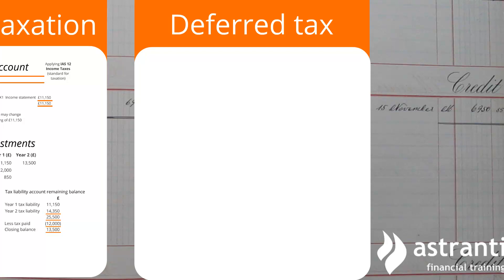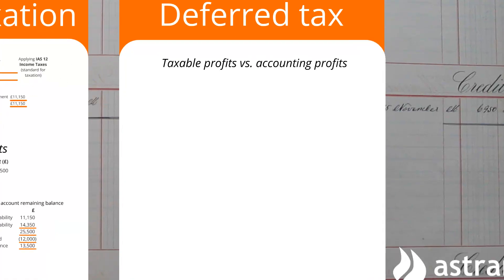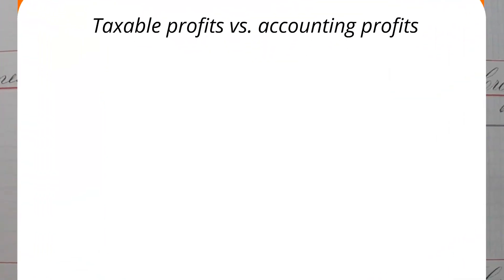So what actually is deferred tax? Well, essentially deferred tax arises due to the differences that exist between a company's accounting profits and a company's taxable profits. In every accounting period, a business will net off its income and expenses in relation to the period in question, and we'll use this to calculate its accounting profit, which will then be shown in its statement of profit or loss or income statement.